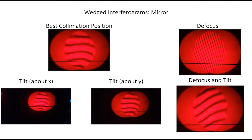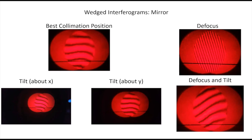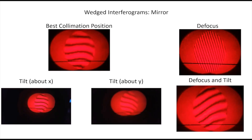Interferograms were produced using a wedge shear plate; here are the results for a curved mirror. Because the mirror is placed such that the focal point and center of curvature coincide, at the best collimation position there should be no spherical. The spherical seen may be due to the other lenses in the system prior to the mirror. The defocus interferogram is as expected — straight fringes at an angle from the reference line. The change in the interferogram from a tilt in the y-axis versus tilting the x-axis was drastic, whereas tilt in the x produced relatively no change.